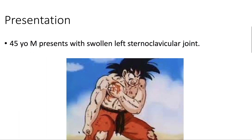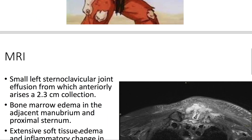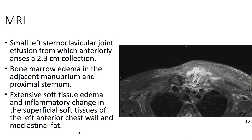Presentation: we have a 45-year-old male presenting with a swollen left sternoclavicular joint. On MRI, here T2-weighted imaging, we see a hyperintense, irregularly shaped 2.3 cm collection at the left sternoclavicular joint.